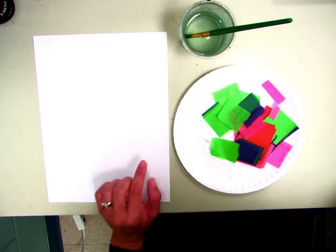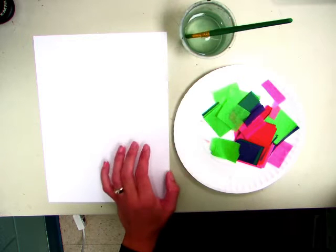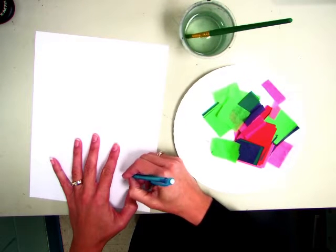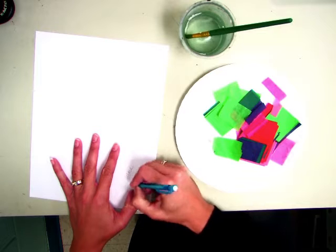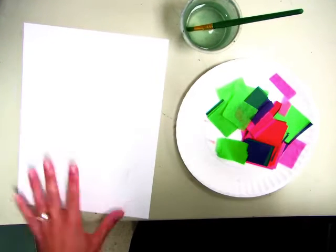First grade, today I'm going to teach you how to stain paper using tissue paper. The first thing you're going to do is write your name, first grade, and your teacher's initial on your paper. You can see I have it there.